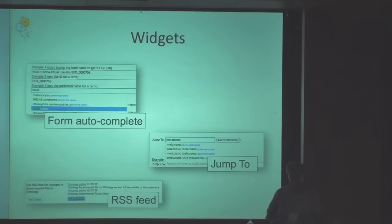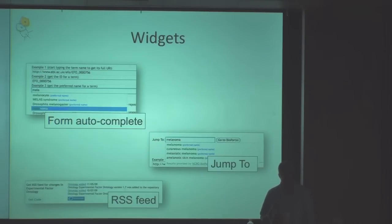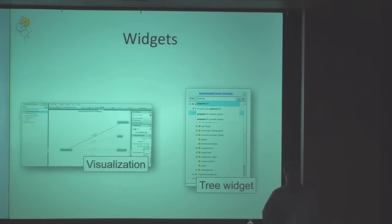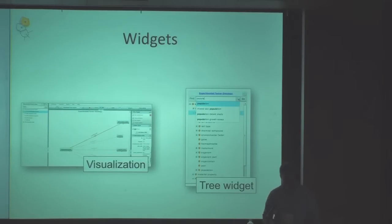We've also developed a number of widgets to make it easy to incorporate ontology terms within web-based data annotation forms. We have a form autocomplete widget that you can parameterize to return the full URI of the term, just the term identifier, or the text string. We also have widgets for visualizing an ontology on your own website — you can incorporate either a graph widget or a tree widget.